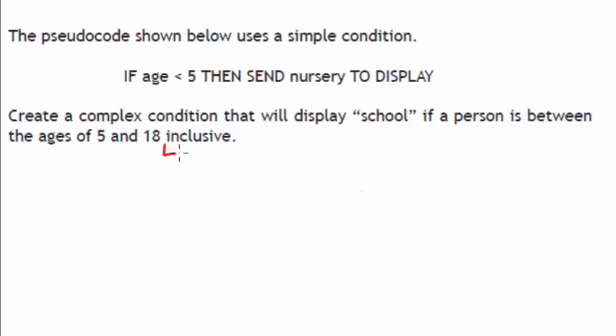But if they're asking you to write it and they mention the term inclusive, that actually means including. So with this one, they want you to output school to the display if the person's age is 5 and 18 inclusive.